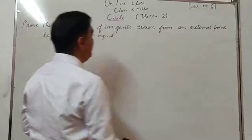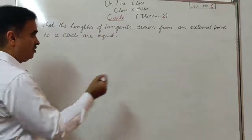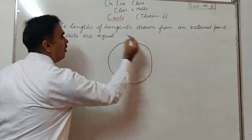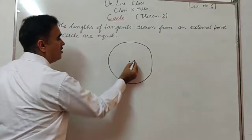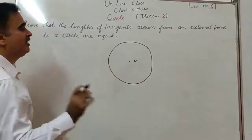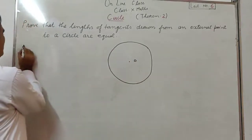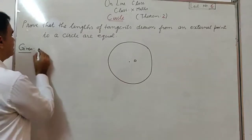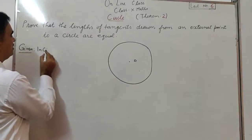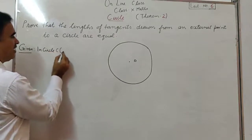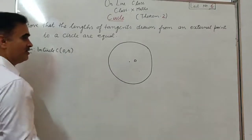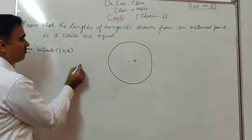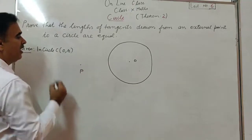Now I am going to start. Try to understand. First of all, we have to draw a circle. To draw a circle, we require a center and some radius. In the 'given' section, write: this is a circle with center O and radius R.